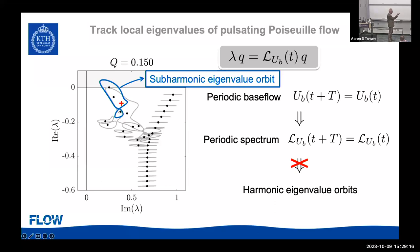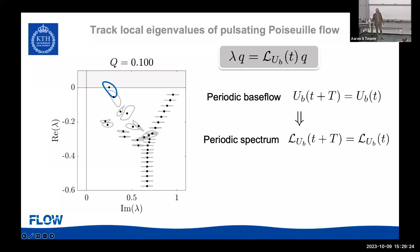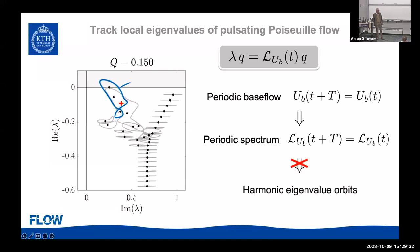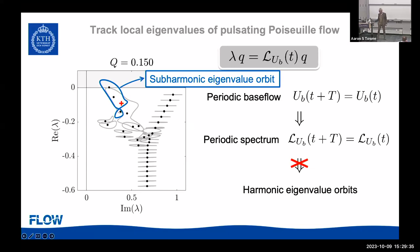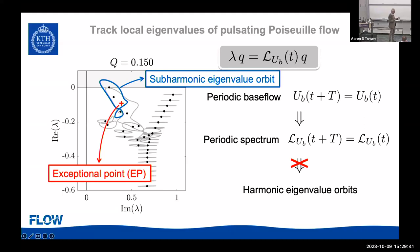You can see the blue orbit goes up, touches one of the gray orbits, and then becomes subharmonic. The red dot where it touches is called an exceptional point — a point where two eigenvalues are the same, a degenerate eigenvalue. I didn't actually know it was called an exceptional point; my graduate student pointed that out. It turns out there's a big literature about exceptional points.